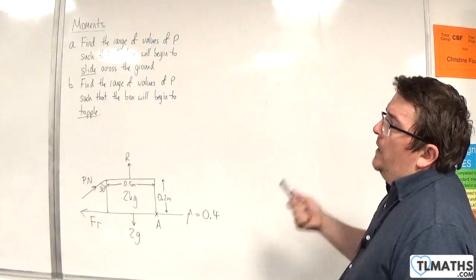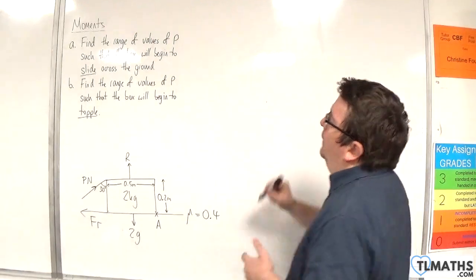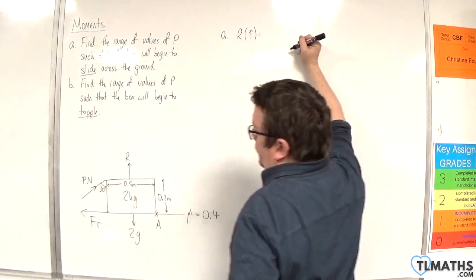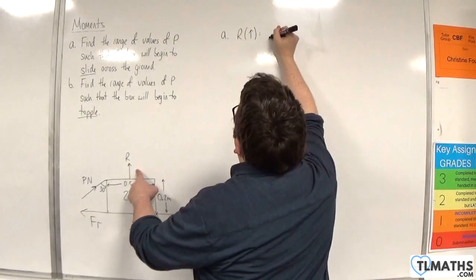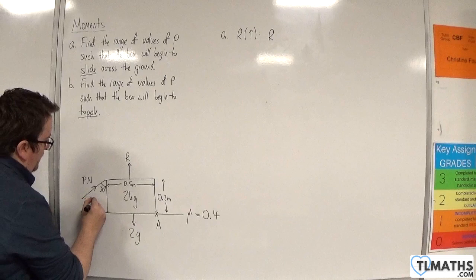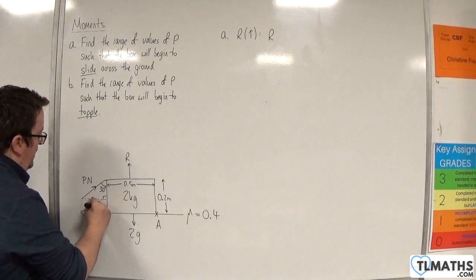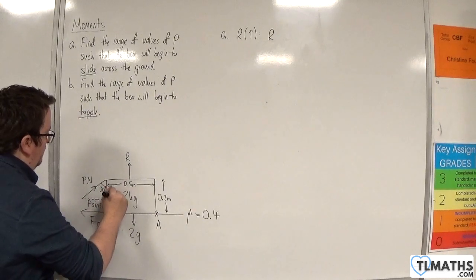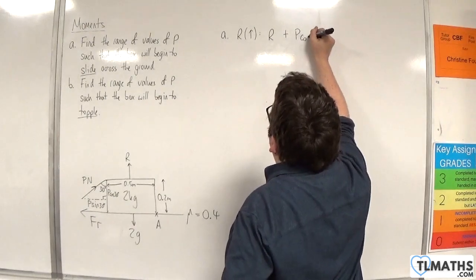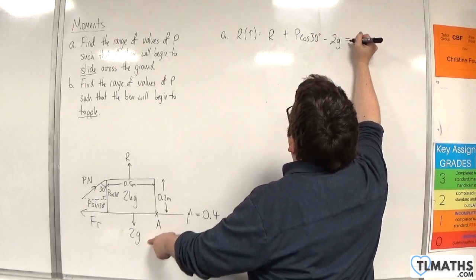Part A: find the range of values of P such that the box will begin to slide across the ground. For part A I'm going to resolve vertically, taking upwards as positive. So we have R, then the vertical component of the P Newton force. Breaking it into components, this will be P sine 30 and P cosine 30, so the vertical component is P cosine 30. So R plus P cosine 30 minus 2G equals 0.